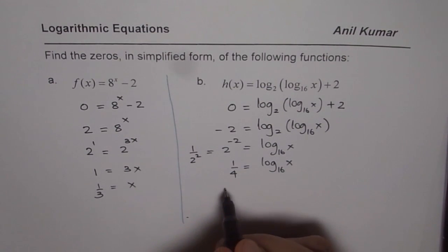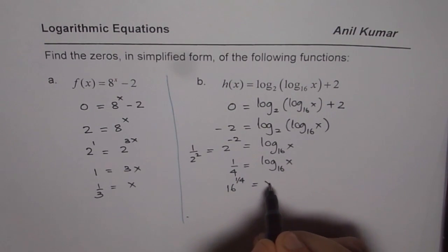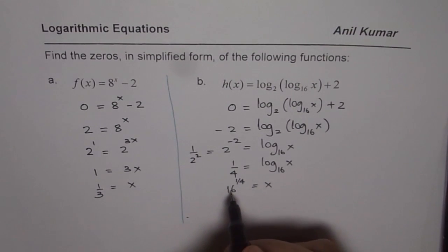Now we can write this again in exponential form, as 16 to the power of 1 over 4 equals x. Square root of 16 is 4 and square root of that is 2. So we get our answer as x is equal to 2.